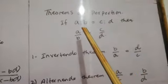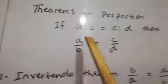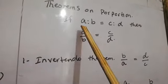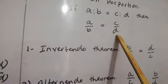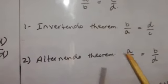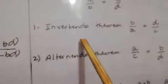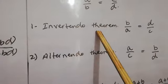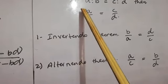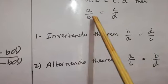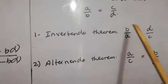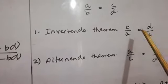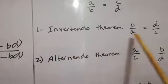If A ratio B is equal to C ratio D, we can write the ratio in the form of a fraction: A ratio B means A by B, and C ratio D means C by D. The first theorem is Invertendo. Invertendo means we will take the inverse of both fractions — A by B will be changed into B by A, and C by D will become D by C. When we interchange these values, this is known as the Invertendo theorem.